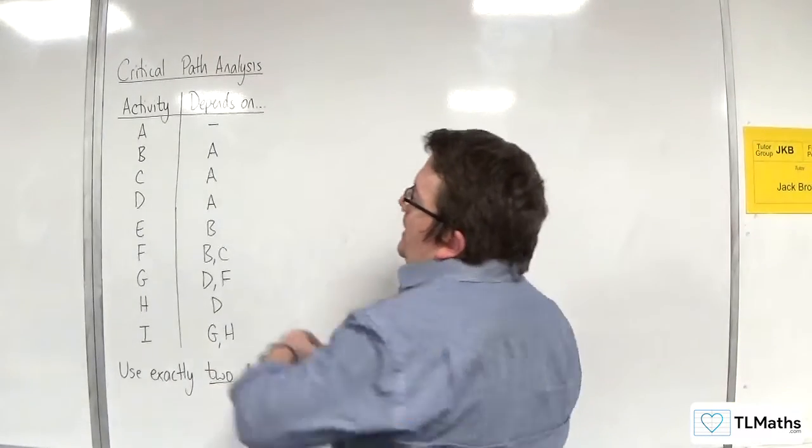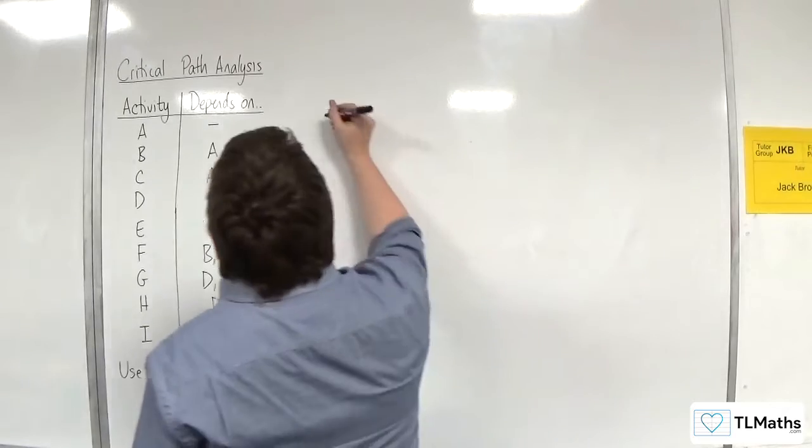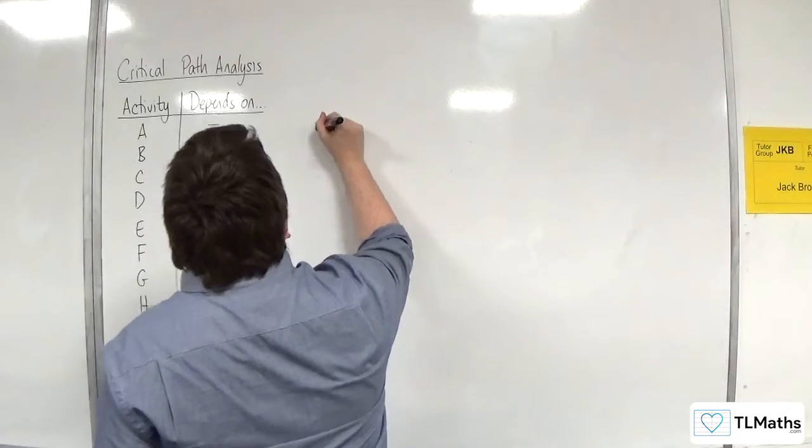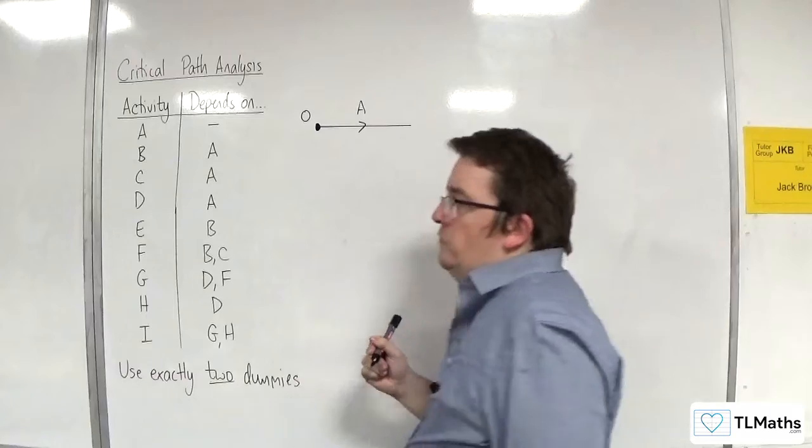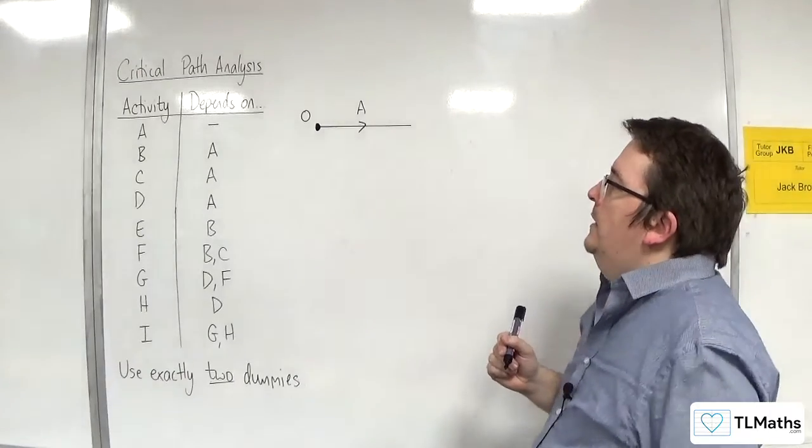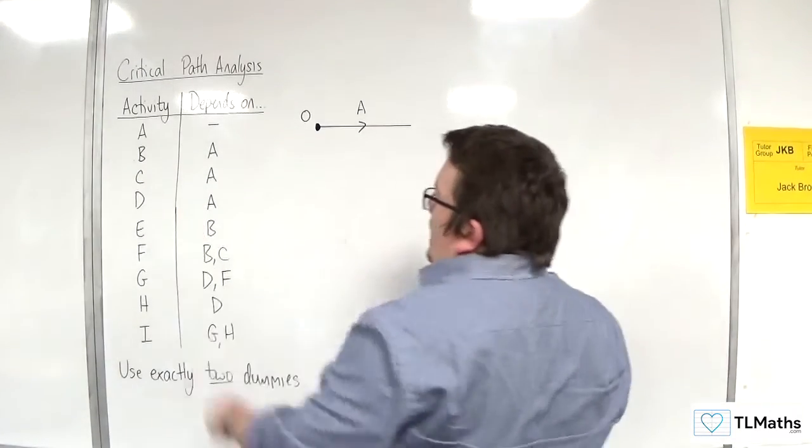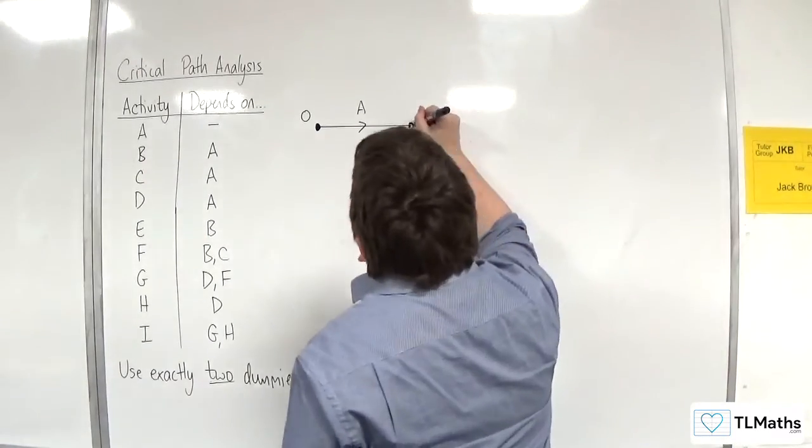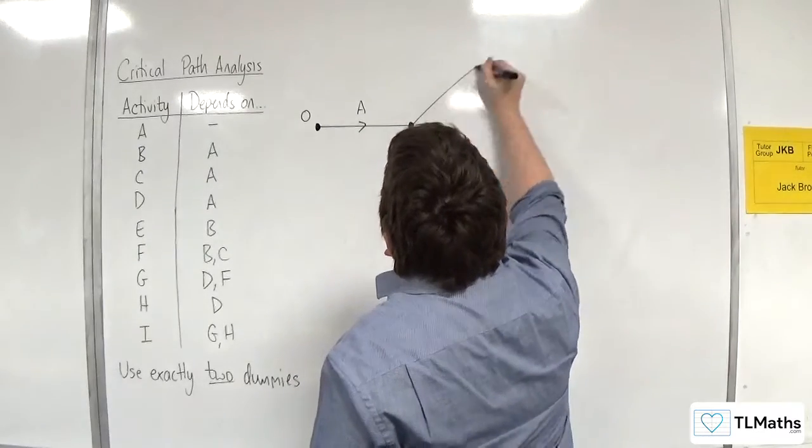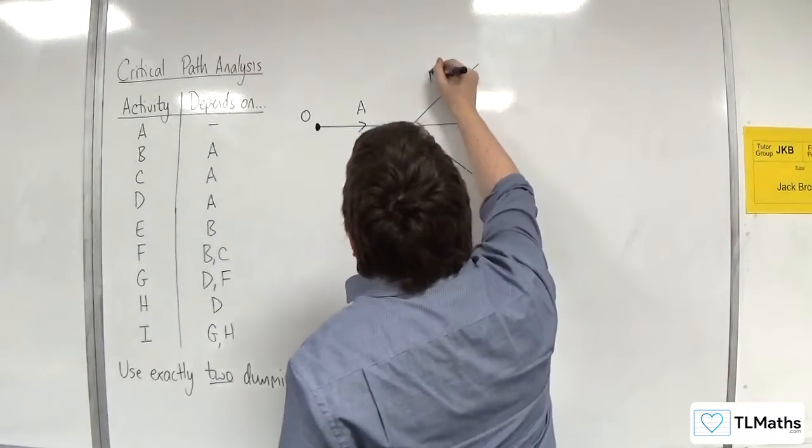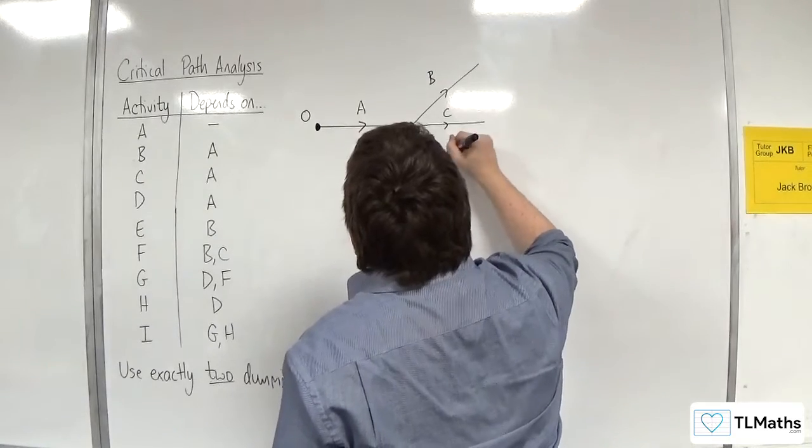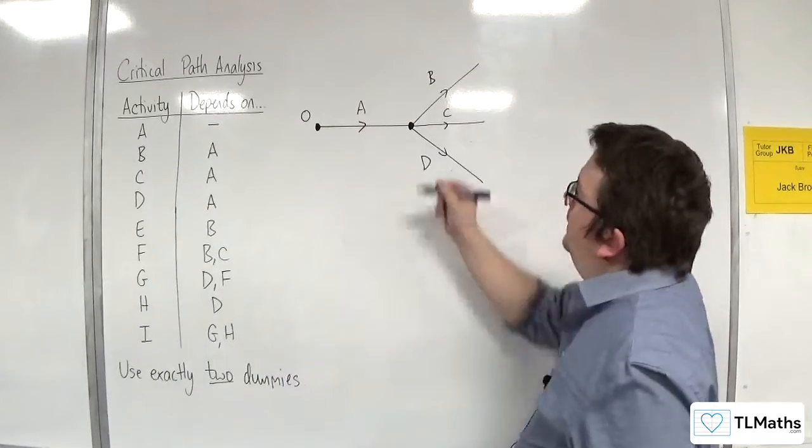So, activity A doesn't depend on anything. I'm going to start off drawing activity A from my start node 0. And B, C, and D all rely on A, so we have that as a node, then B, C, D. And let's label that 1.